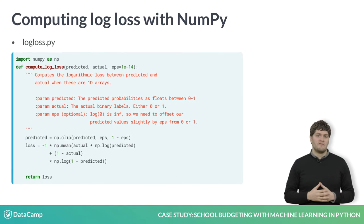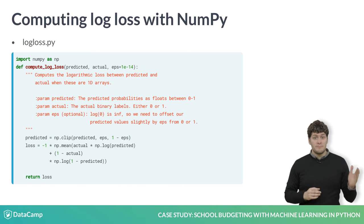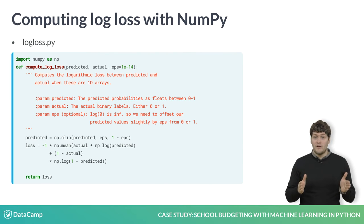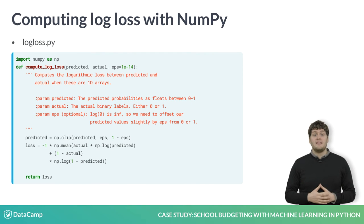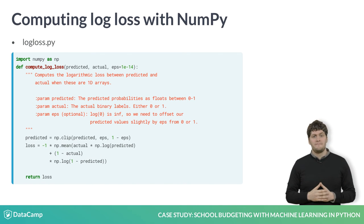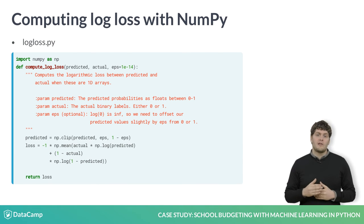Here is an implementation of log loss. The most important detail is the clip function, which sets a maximum and a minimum value for the elements in an array. Since log of 0 is negative infinity, we want to offset our predictions ever so slightly from being exactly 1 or exactly 0, so that our score remains a real number. In this example, we use the EPS variable to be 0.0001 (13 zeros and then a 1), which is close enough to 0 to not affect our overall scores. After adjusting the prediction slightly with clip, we calculate log loss using the formula.